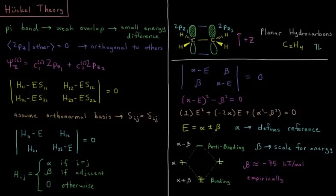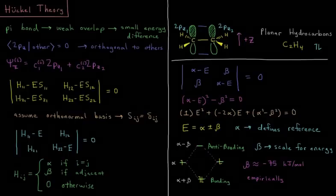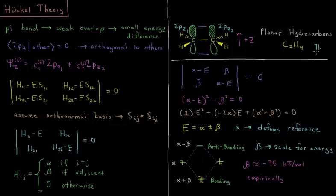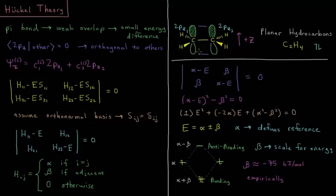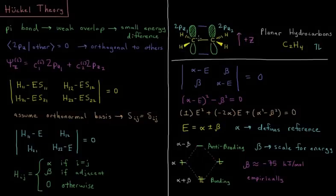Our pz orbitals form a pi bonding system that sort of forms its own unique subsystem of the molecule. We've got two electrons here in C2H4, and we've got two orbitals in the 2pz of each carbon atom. So we're going to look at how these arrange to form bonding and antibonding orbitals, and what are the energies of those two orbitals.